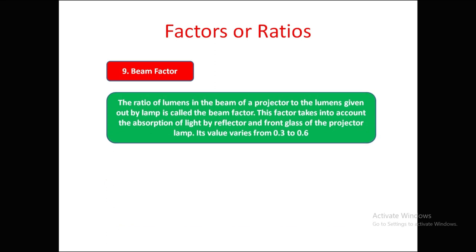Beam factor is the ratio of lumens in the beam of a projector to the lumens given out by the lamp. This factor accounts for the absorption of light by the reflector and front glass of projector lamps. Its value varies from 0.3 to 0.6.